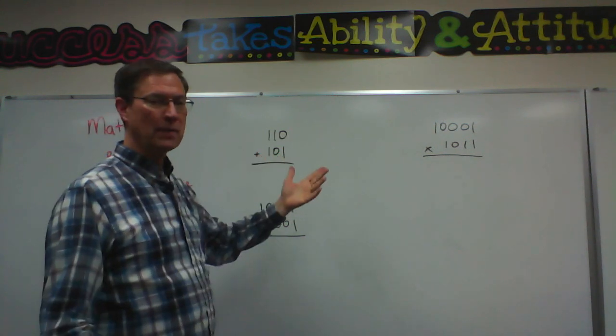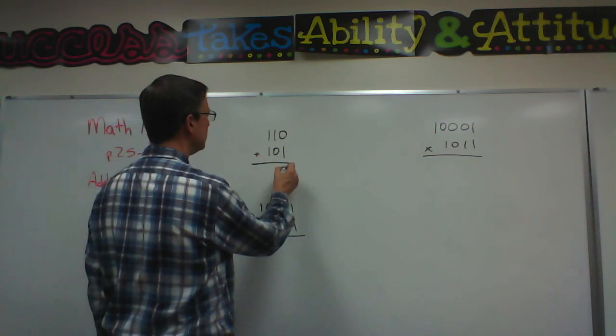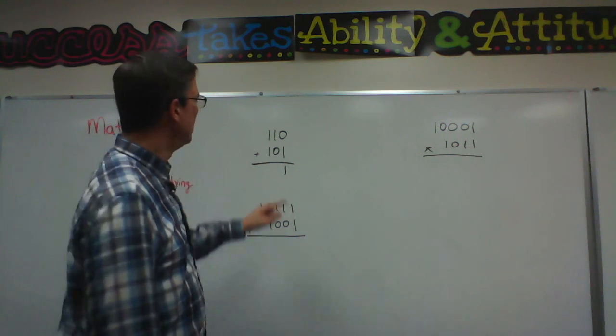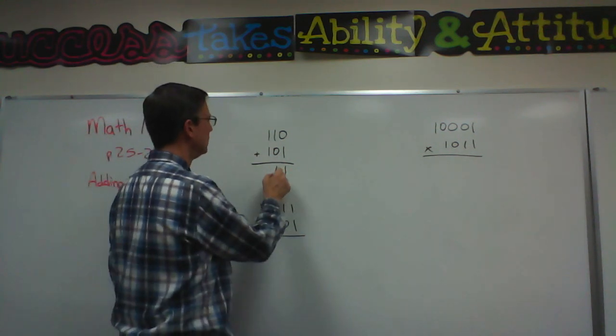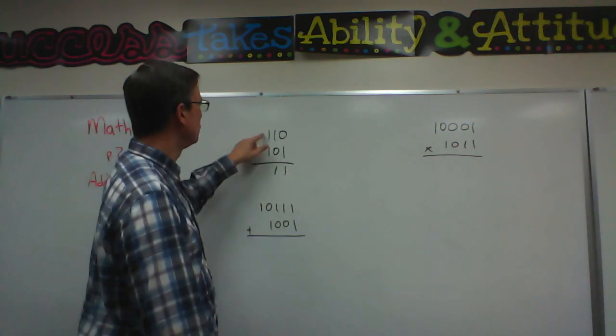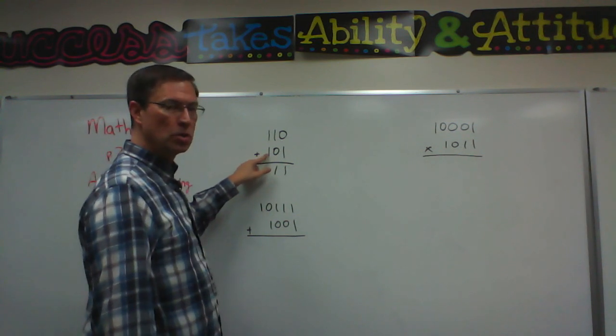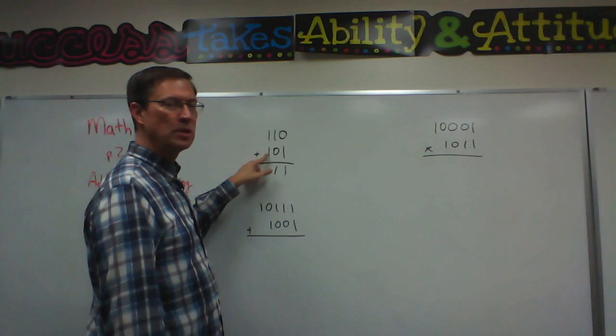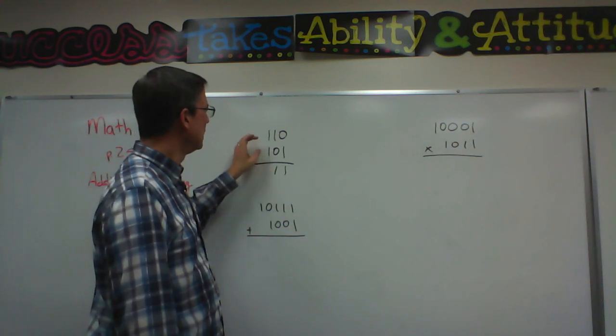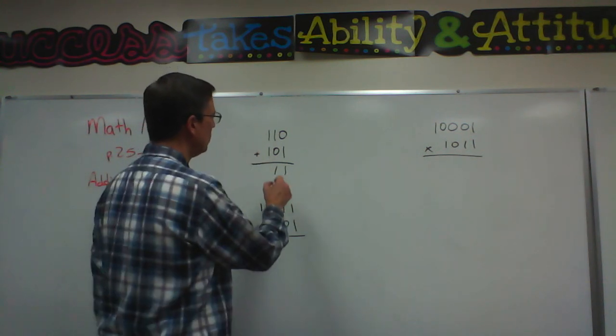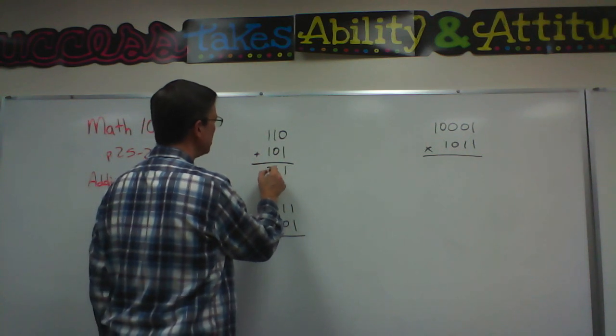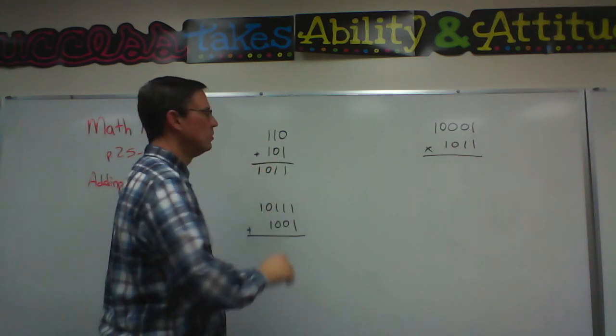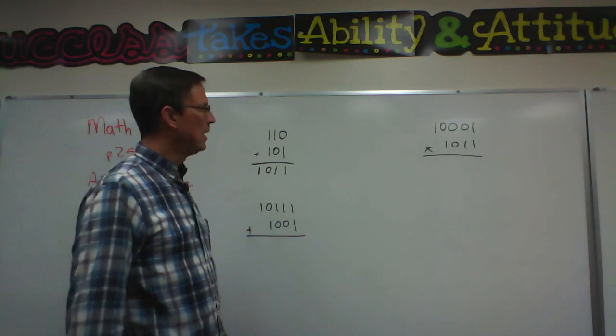When we're adding, we can add 0 plus 1, obviously that is simple, that is just 1. 1 plus 0 is 1. 1 plus 1 is 2, but remember in base 2 we don't have the digit 2, we only have ones and zeros. So when you add 1 plus 1 to get 2, it actually bumps a 1 into the next column.